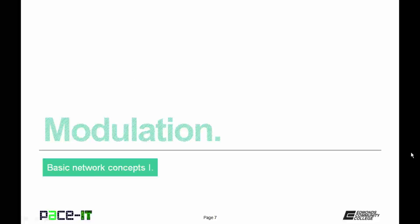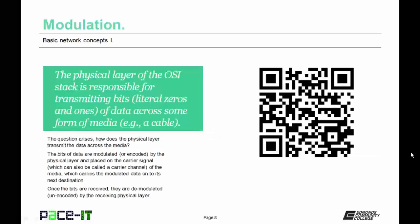With that covered, let's move on to modulation. The physical layer of the OSI stack is responsible for transmitting bits of data across some form of media — it literally is responsible for transmitting zeros and ones across the media, like a cable. The question arises: how does the physical layer transmit the data across the media? The bits of data are modulated or encoded by the physical layer and placed on the carrier signal of the media, which carries the modulated data onto its next destination. Once the bits are received, they are demodulated or unencoded by the receiving physical layer.